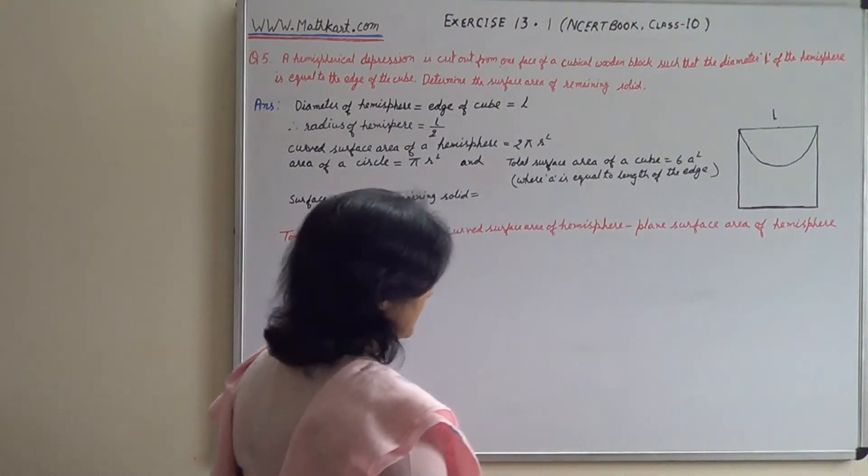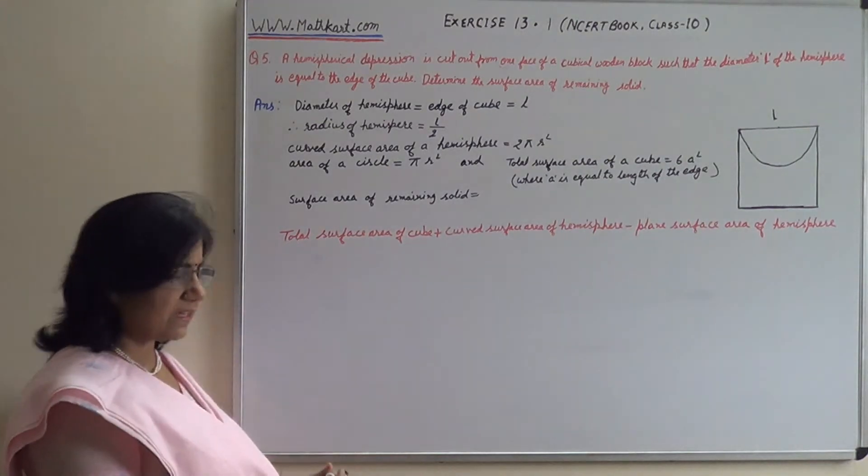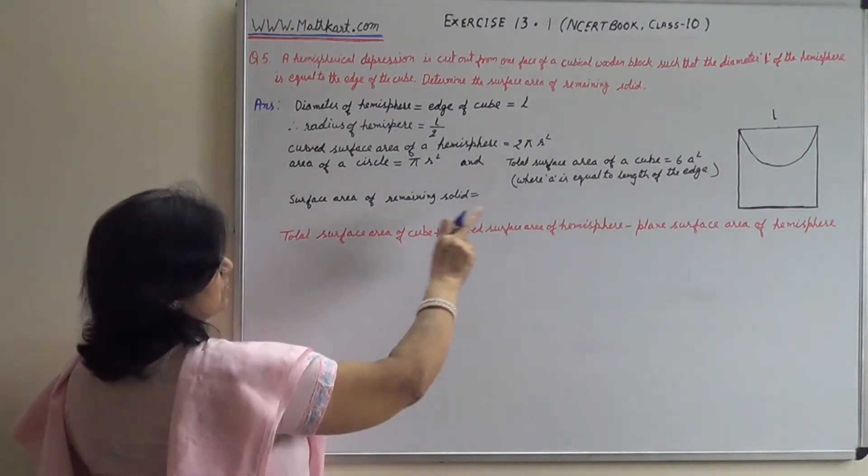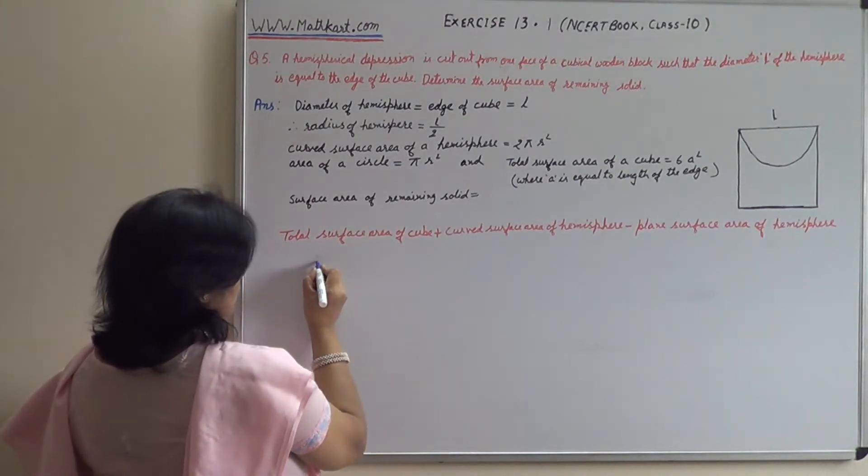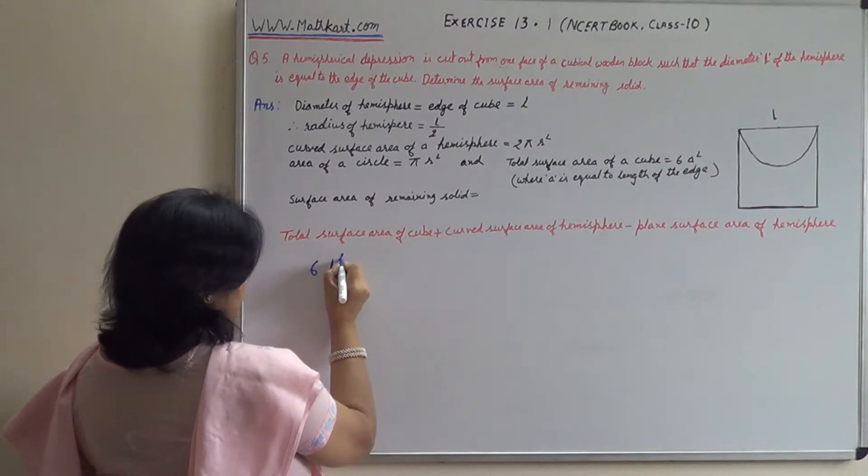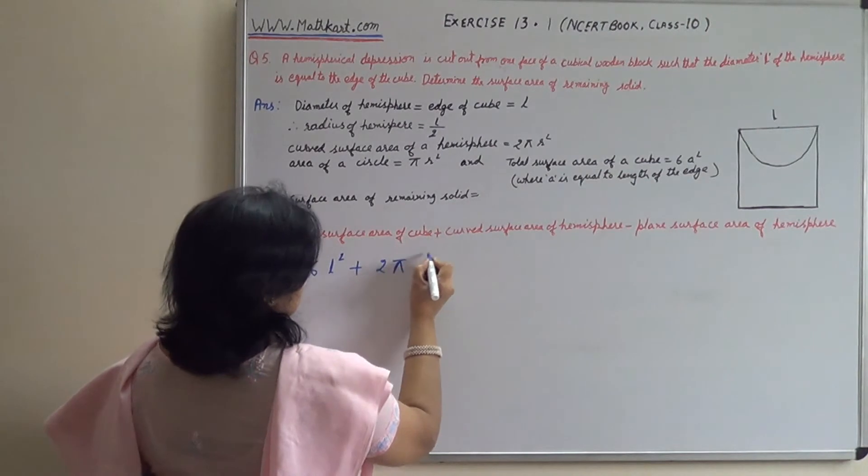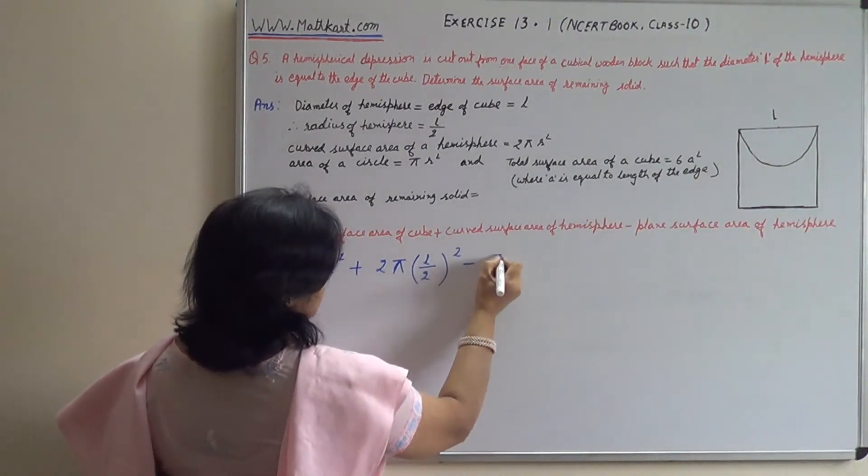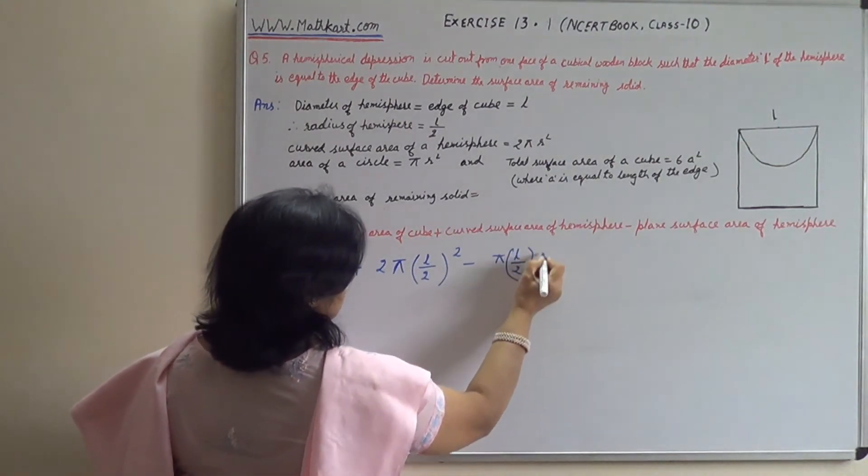We only have one measurement given - the size of cube is L. So ours will become 6 L squared, which is of the cube only. 6 L squared plus 2 pi into L upon 2 the whole squared minus pi L upon 2 the whole squared.